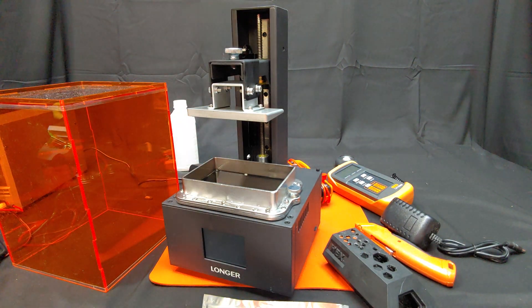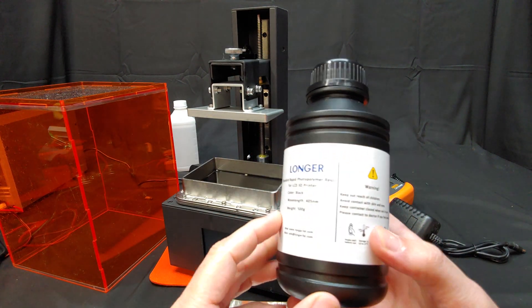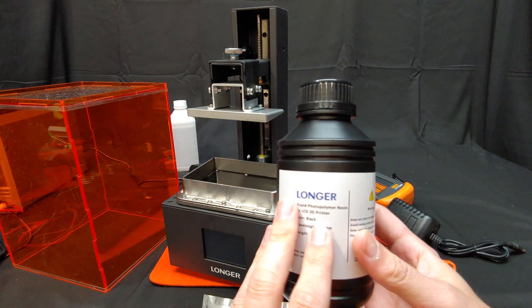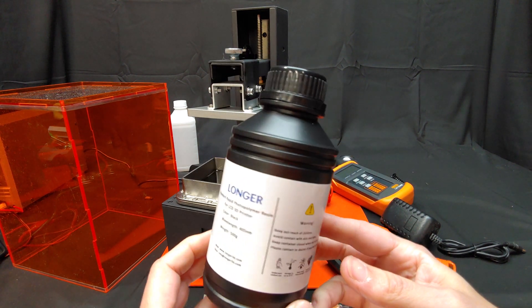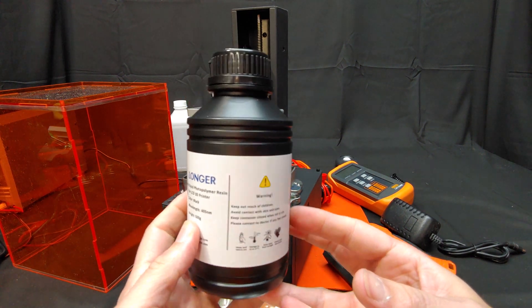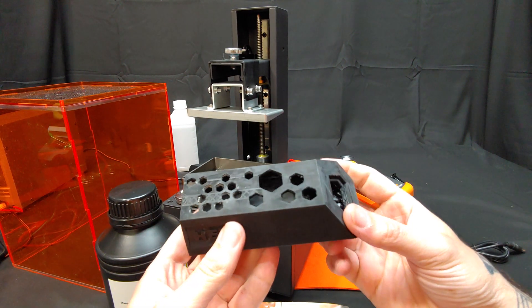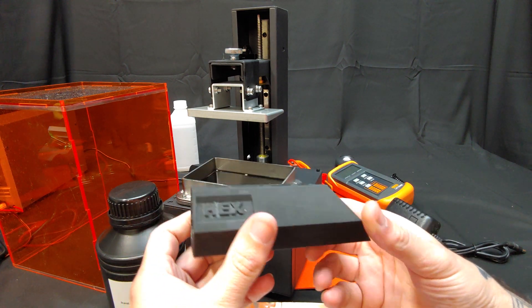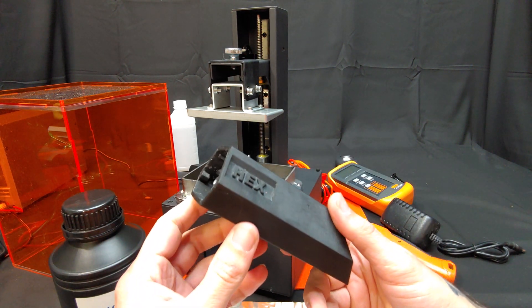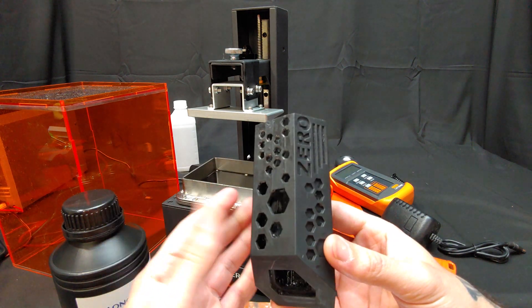The resin it uses, I buy the one that it recommends because I don't know any better. I don't know if anything else will work with this properly so for the time being I'm sticking with what the manual says to get. These 500 gram, because they sell it by weight rather than by volume, this 500 gram bottle costs $20 and this used about half of the bottle to make. So this practice piece cost about $10 to make. That gives you an idea of how expensive it will be to run this.